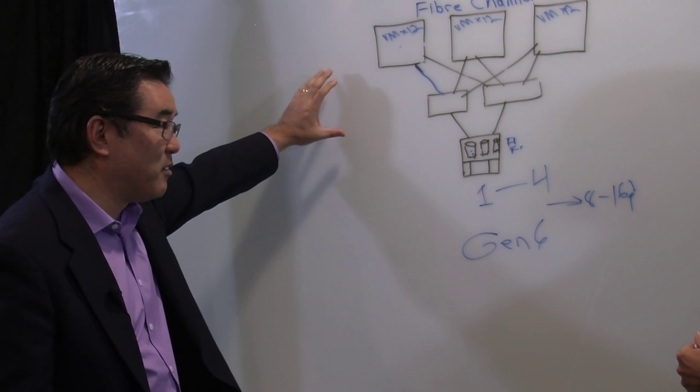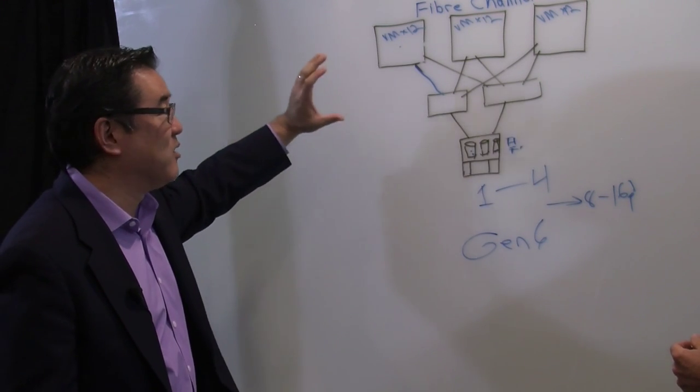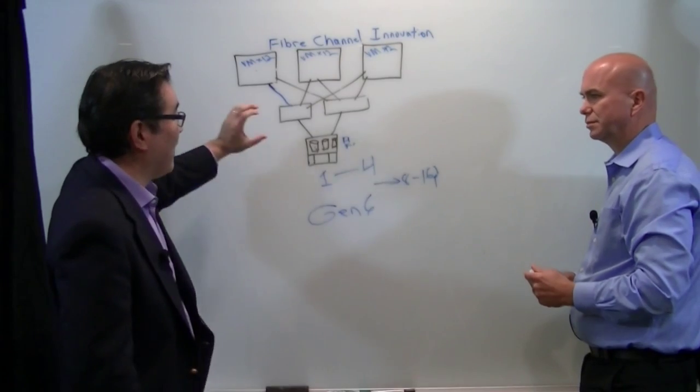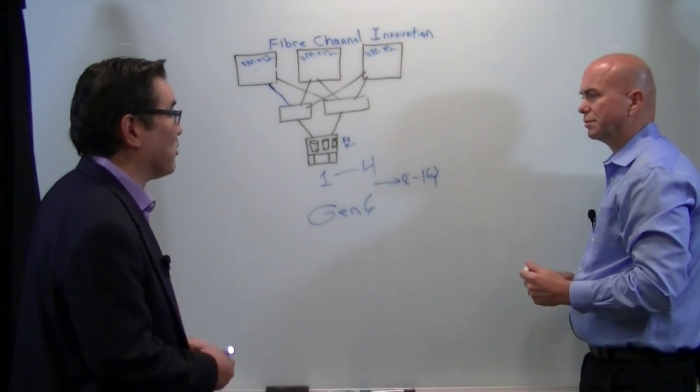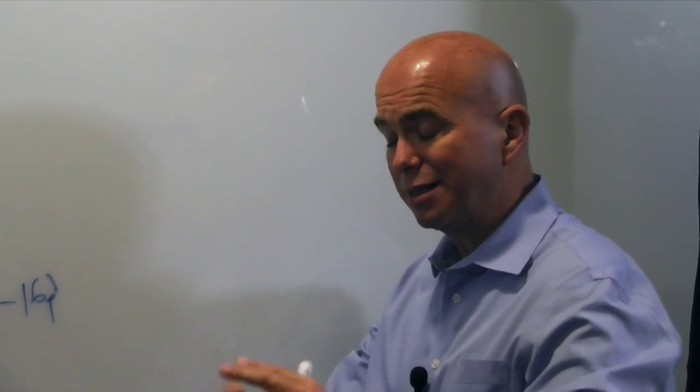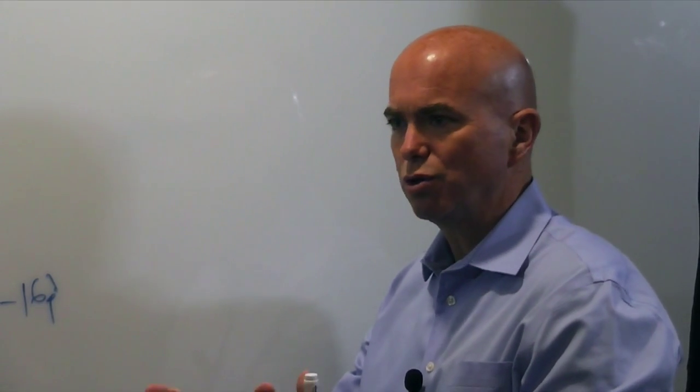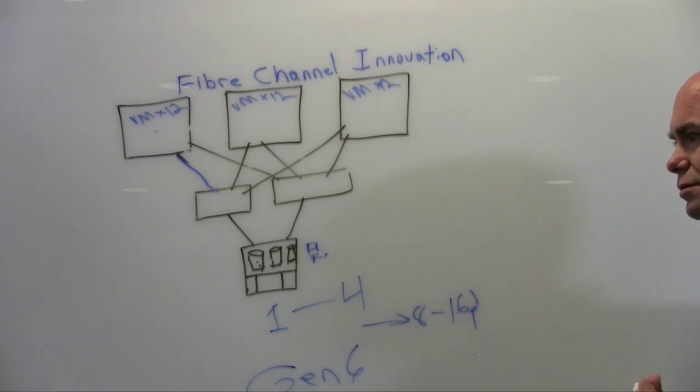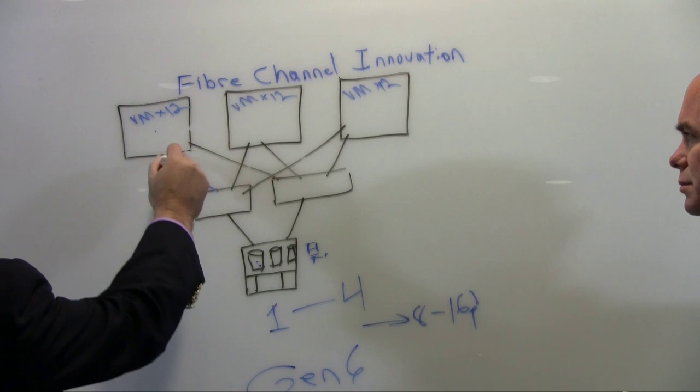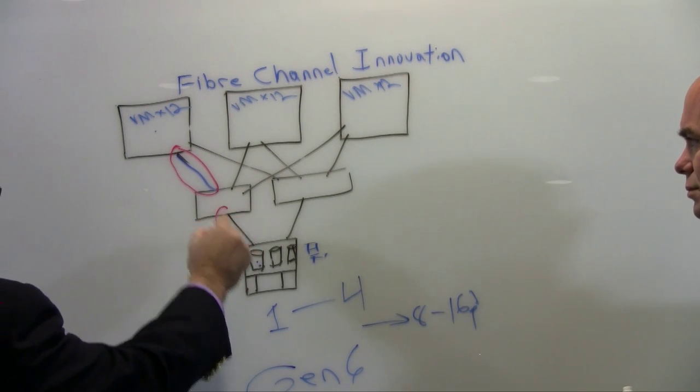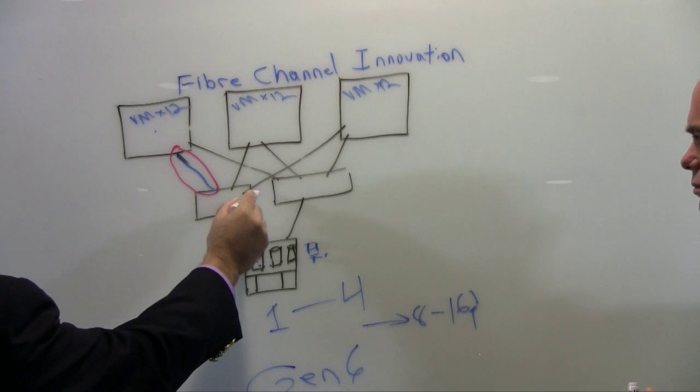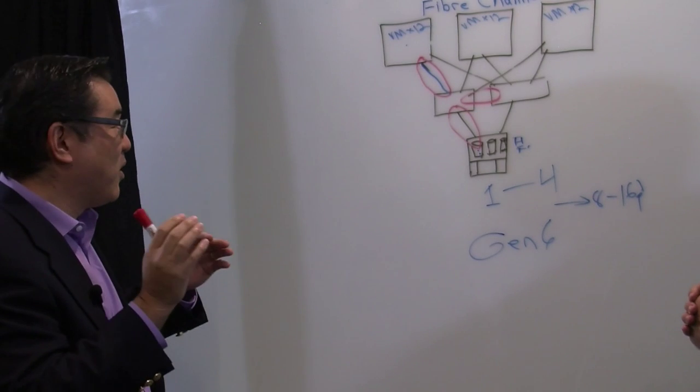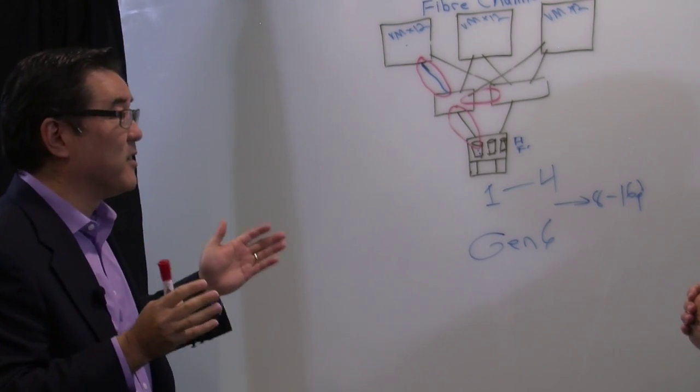The 128 though, at least in this current form, is sort of a special use case, right? It is initially, but when we see the rollout of Gen 6, the initial deployments will be sort of host to switch and switch to storage over time. But in the middle is this inner switch technology where the 128 is really targeted initially.